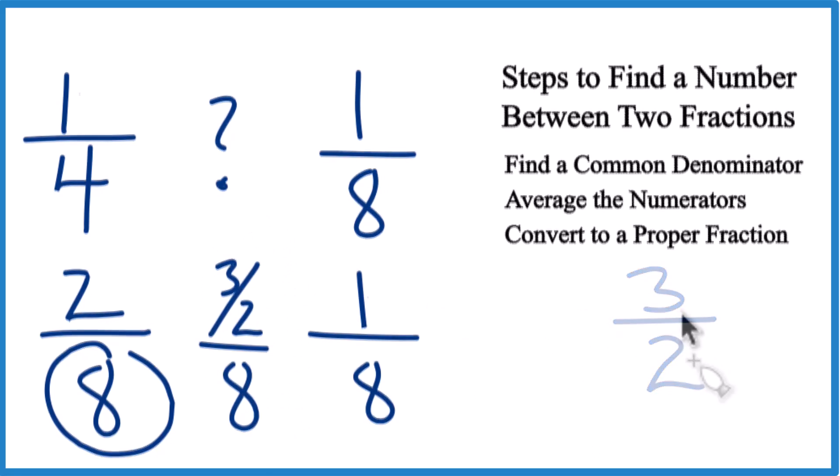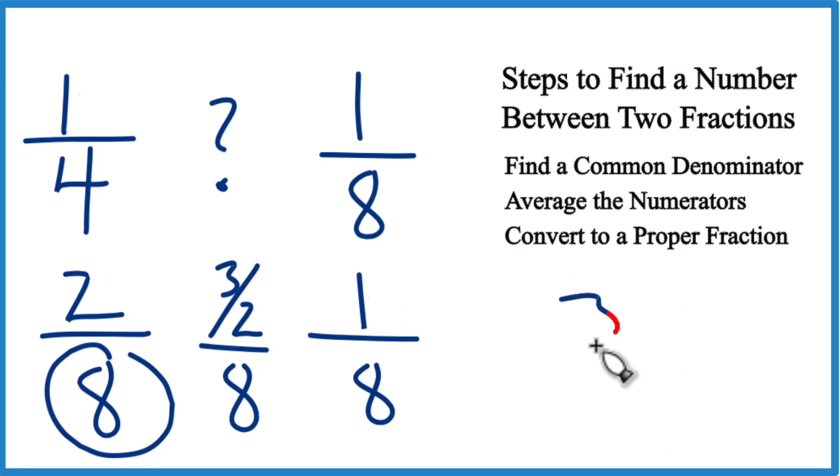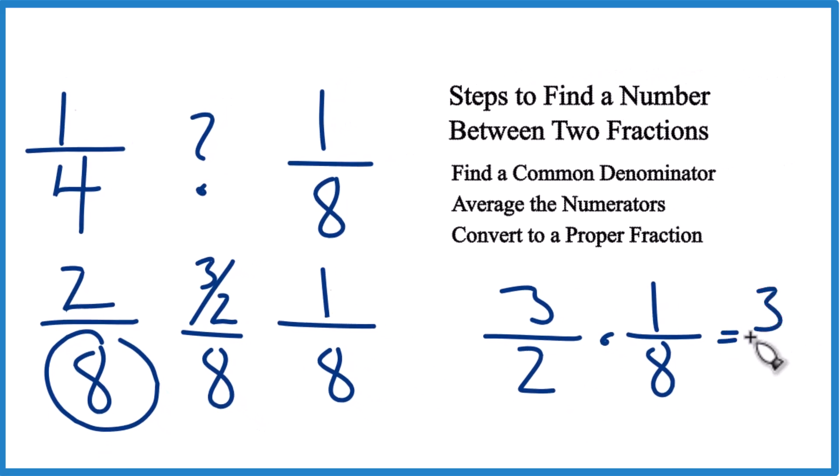Here's how you do it. To convert 3/2 over 8 to a proper fraction, we'll take 3/2 and multiply it by 1/8. 3 times 1 is 3. 2 times 8 is 16. And that's the answer.